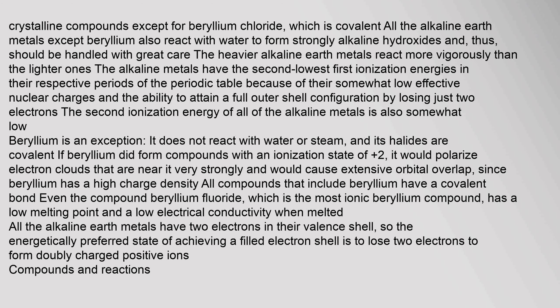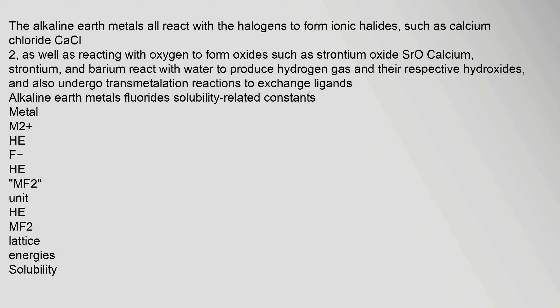All the alkaline earth metals have two electrons in their valence shell, so the energetically preferred state of achieving a filled electron shell is to lose two electrons to form doubly charged positive ions.